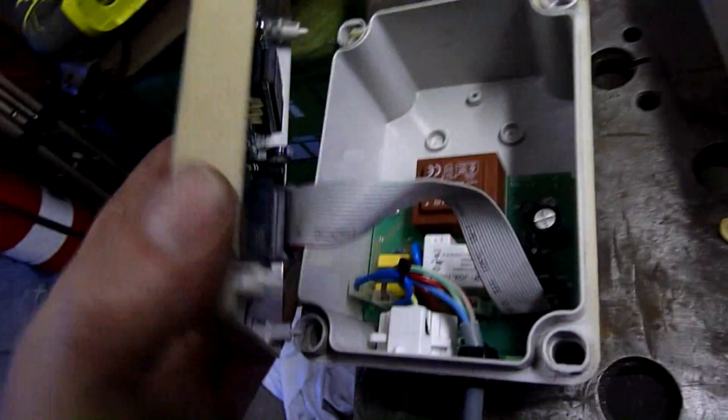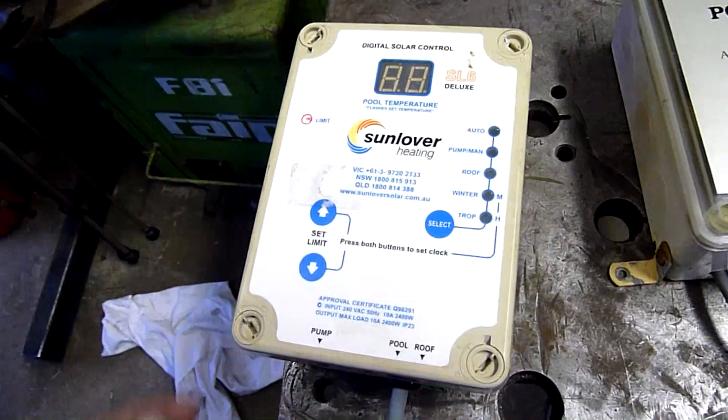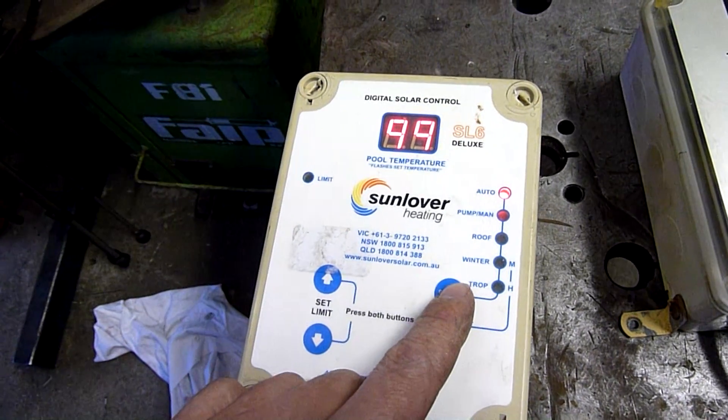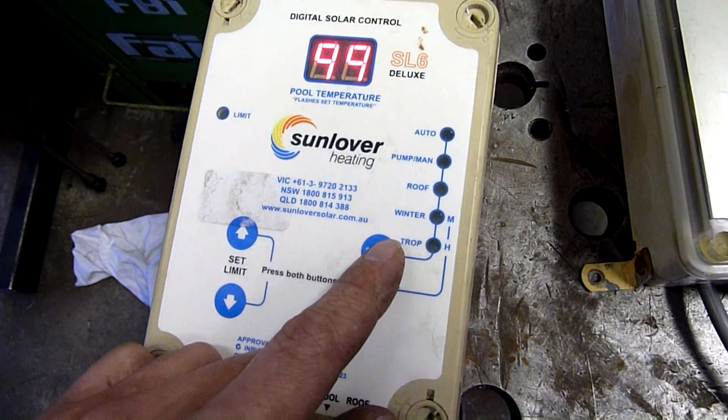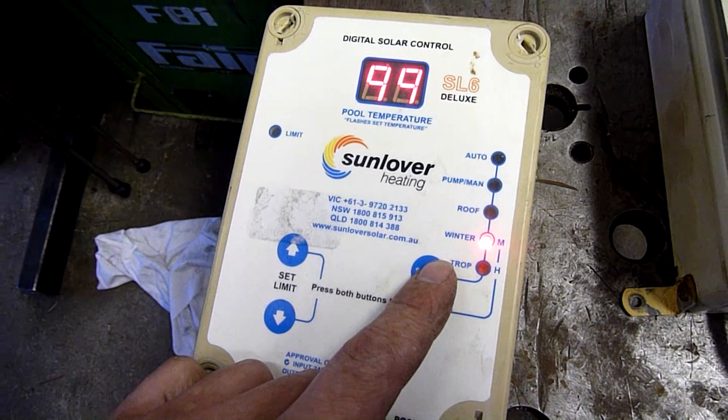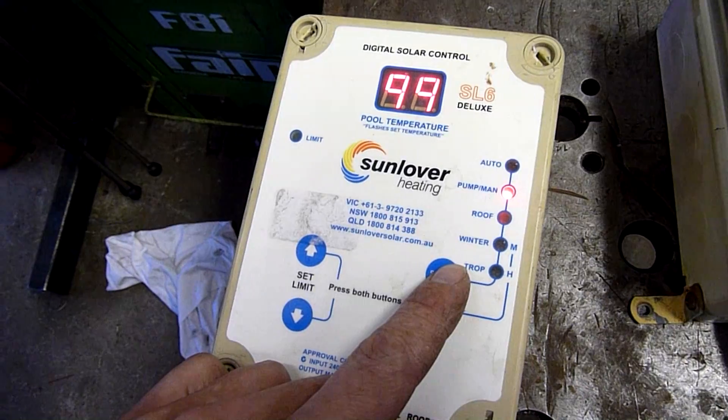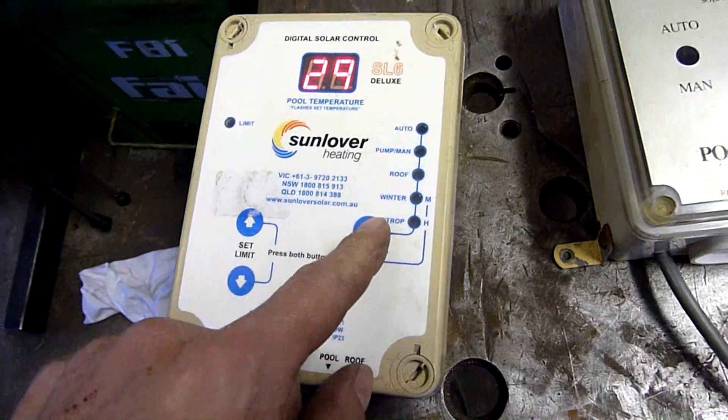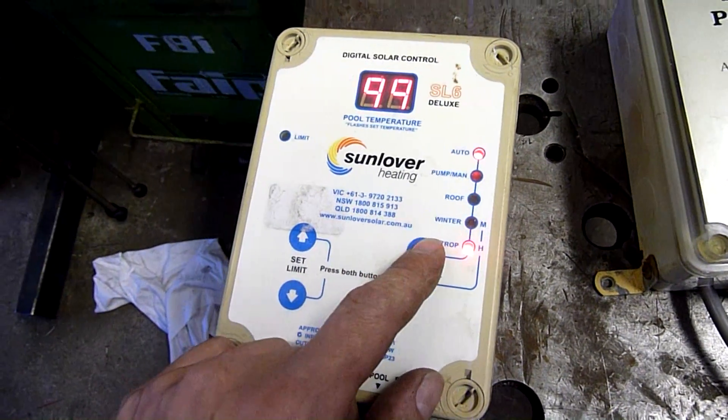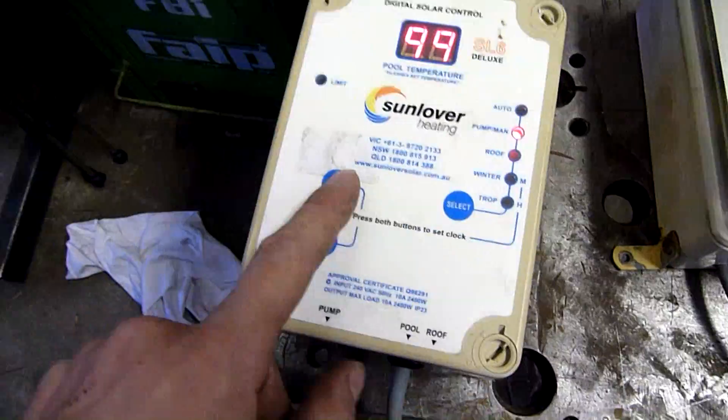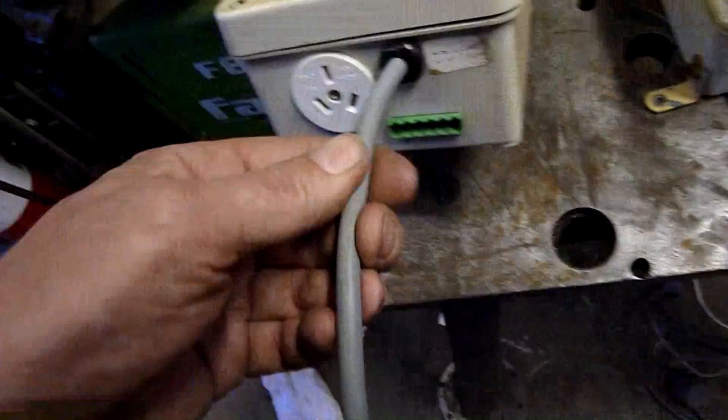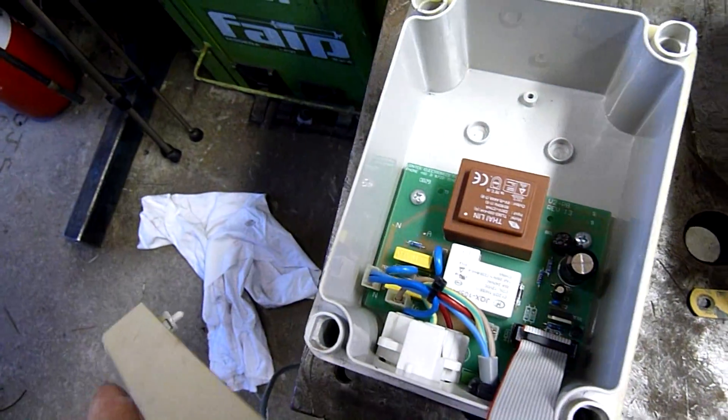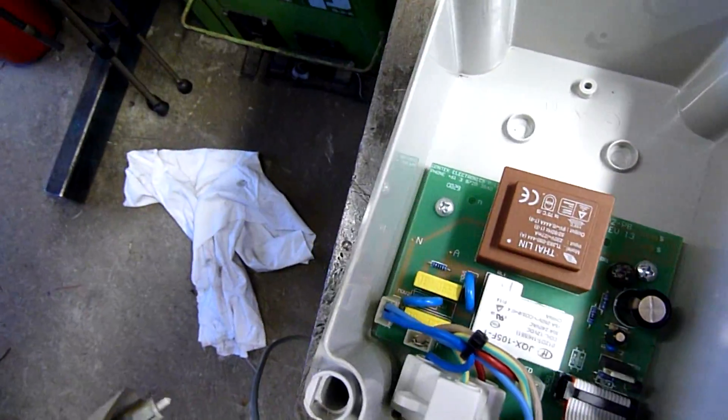Well, it seems like someone had been inside this one and unplugged the ribbon cable. That would explain why it was dead. So it's just going through its start-up sequence. Auto, pump or manual. It's not even trying to trigger the relay and pump manual. Mind you, it's throwing error code because there's no thermistors attached to it.